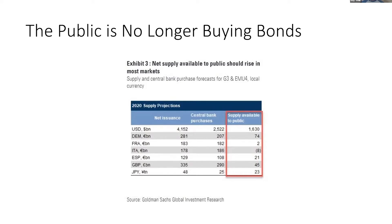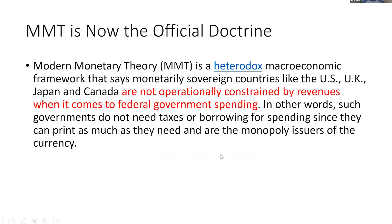So why are they doing this? It starts in the 1970s with a theory called Modern Monetary Theory, or MMT. It started as fringe economics that people thought was crazy, and now it's the official doctrine of every central bank and government in the world. Basically, it says that sovereign countries like the US, Japan, Canada, and the UK are not constrained by their revenues, because you have the ability to print as much as you need since you are the sole issuer of that currency. If you print dollars and nobody else can, it doesn't matter how much you're bringing in from taxes — you can spend as much as you need.